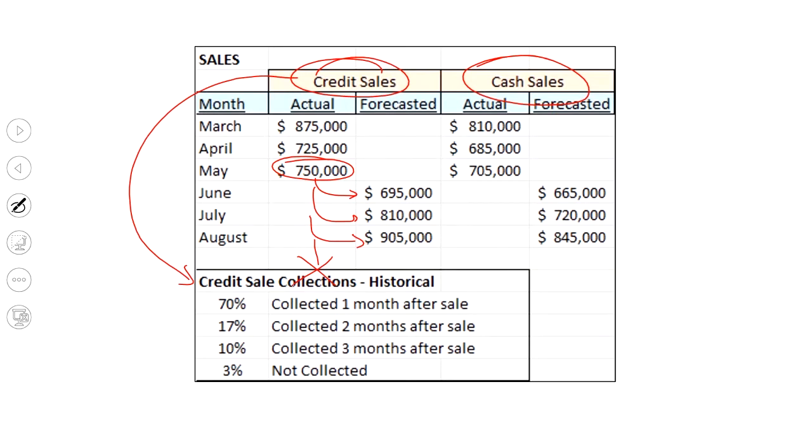When we figure out our cash budget, what isn't important is $750,000. What is important is how much are we going to collect from that $750,000 the following month, and the month after, and the month after. So bear that in mind. That's our sales fact pattern.